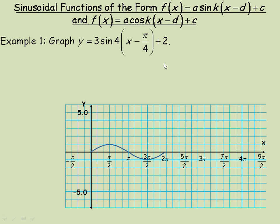In this lesson we'll take a look at graphing sinusoidal functions of the form either a·sin(kx − d) + c or a·cos(kx − d) + c. These will have an amplitude that's not 1, a period that's not 2π, and they'll have some kind of a horizontal translation and/or a phase shift.